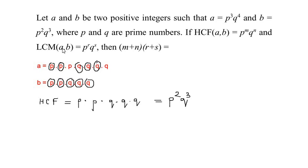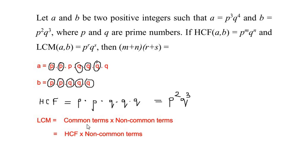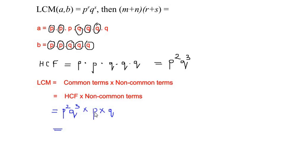Now let us find the LCM of the given integers a and b. The lowest common multiple is the product of common terms with non-common terms. The common terms are the HCF, which we already found. So we write p to the power of 2 times q to the power of 3, multiplied by the non-common terms — the terms not circled — which are p and q. Using the laws of indices, p squared times p gives p to the power of 3, and q cubed times q gives q to the power of 4.